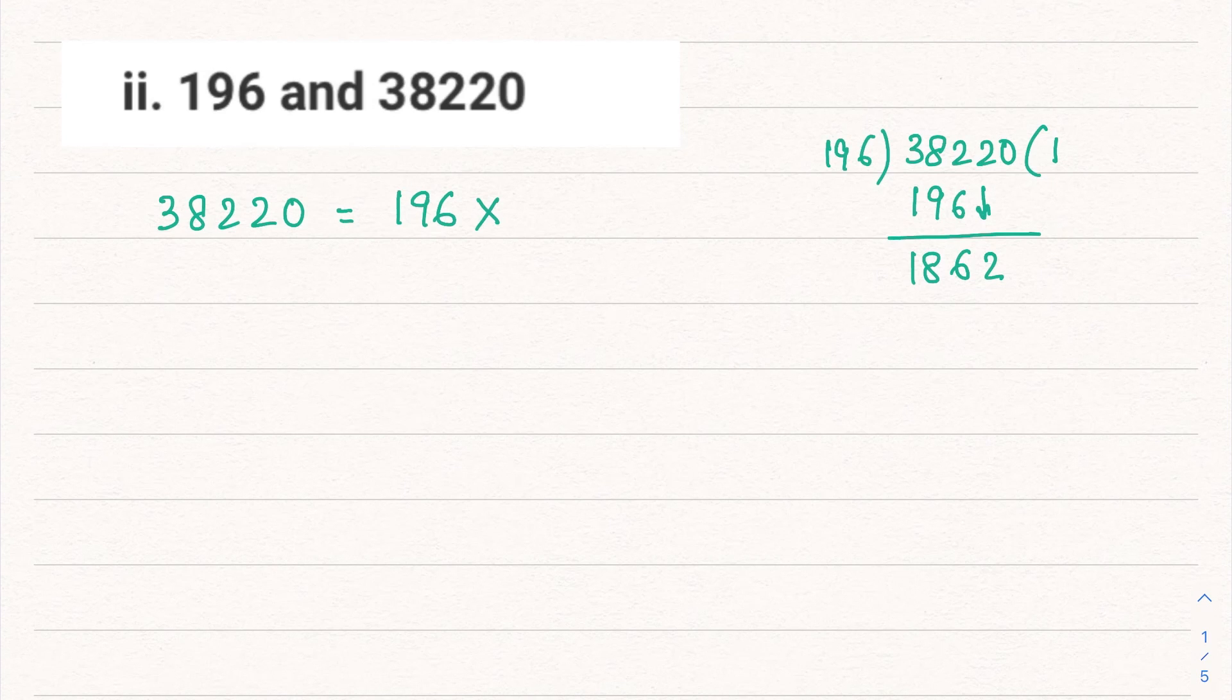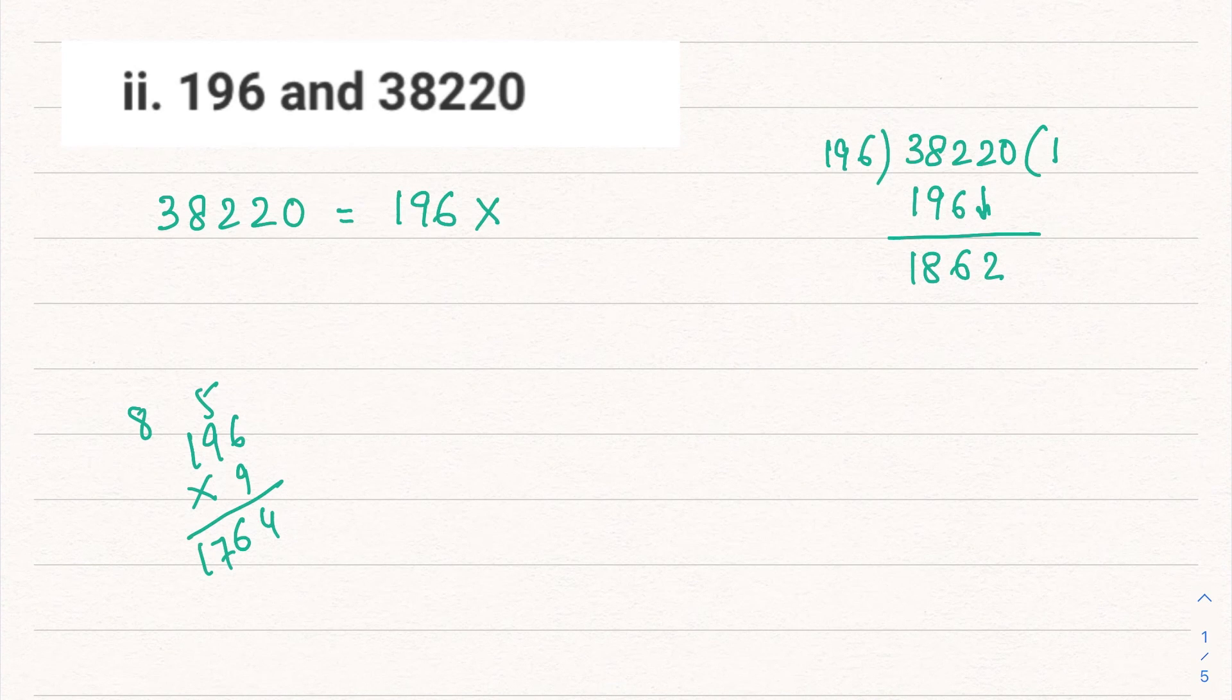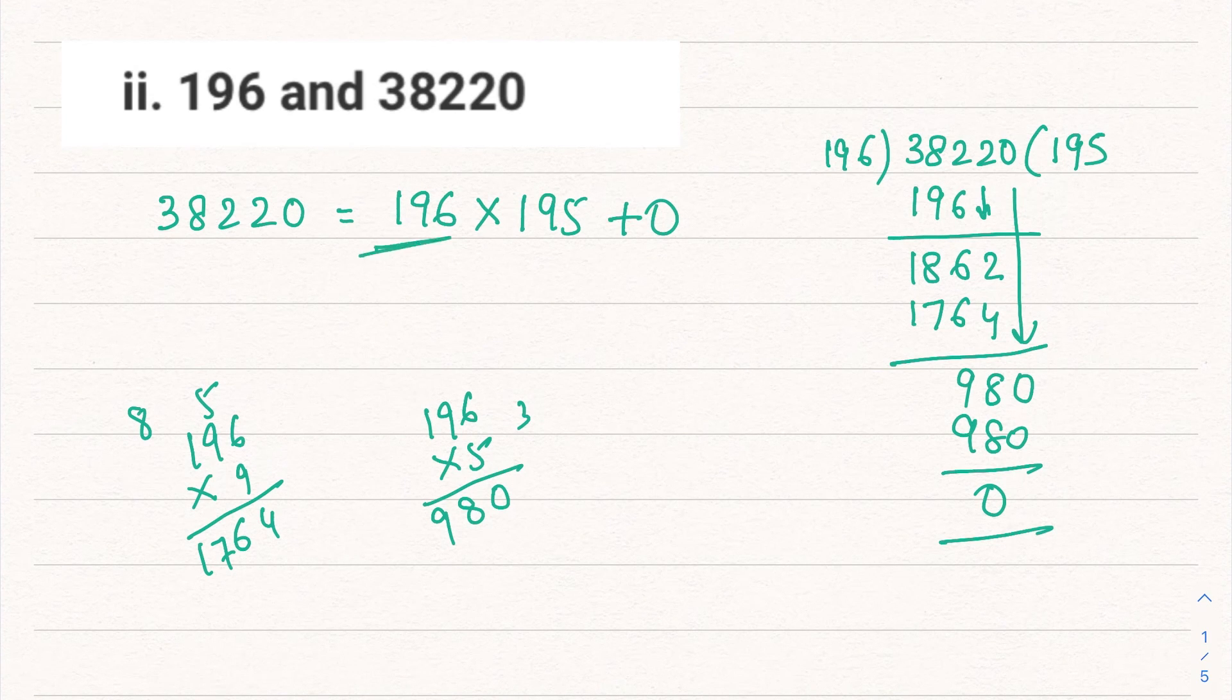Now 196 into 10 is 1960. Let's try multiplying by 9. Subtract, this is coming as 980. 196 into 5, let's check, that is 980. So here we are reaching the remainder 0. 38,220 can be written as 196 into 195 plus 0. So definitely the last divisor was 196, so in this case the HCF is 196.